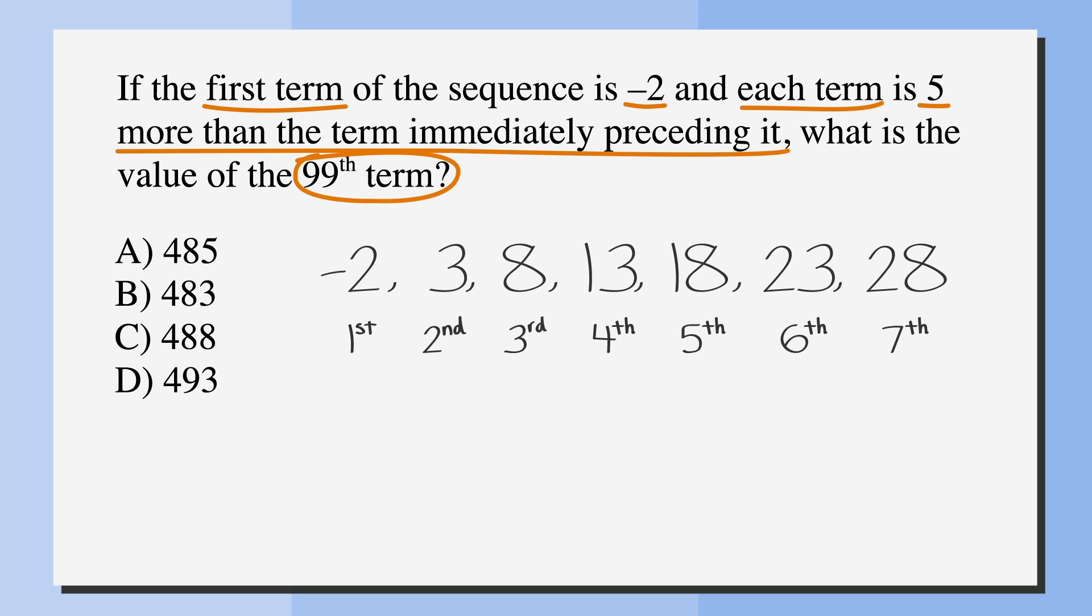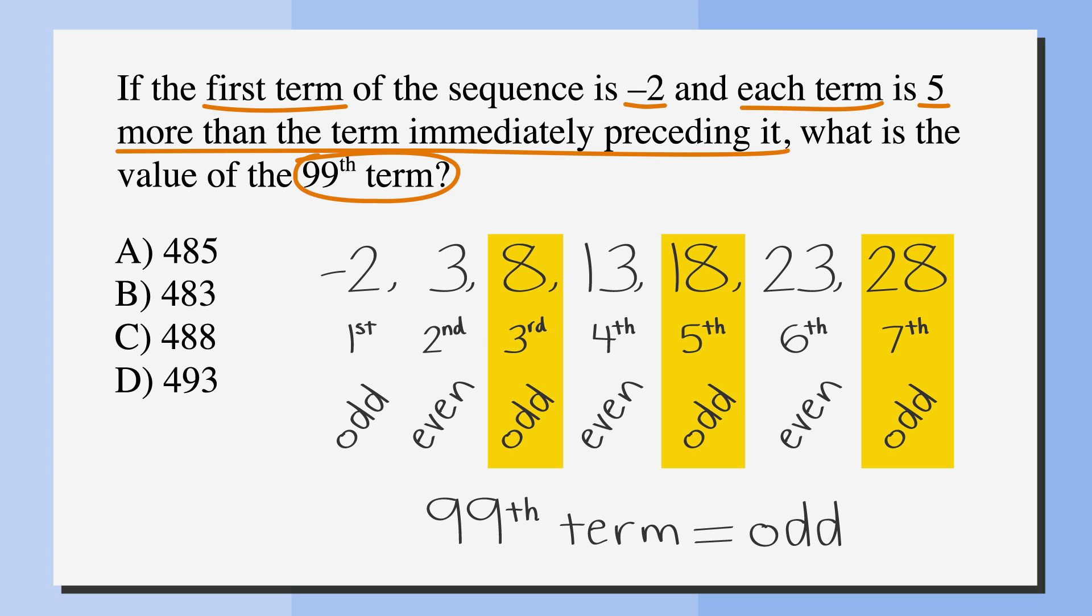After the first term, we see that each odd term ends in 8. So, our 99th term would be an odd term, meaning it would also need to end in 8. Looking at our answer choices, there is only one option that ends in 8. Answer choice C, 488 is correct. Circle it and move on.